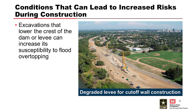The first example involves degrading a dam or levee crest, which can increase the susceptibility to overtopping. This photo is from a levee project in which the levee crests have been degraded for construction of a new flood wall.